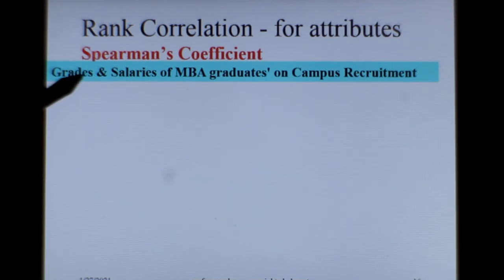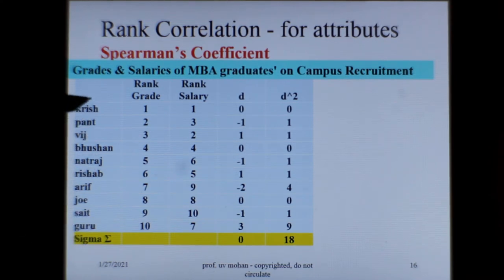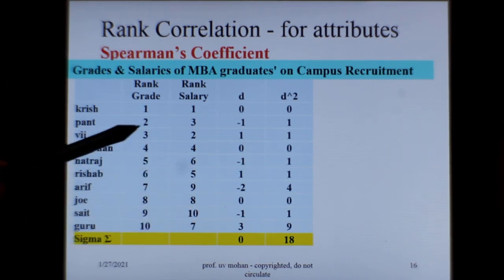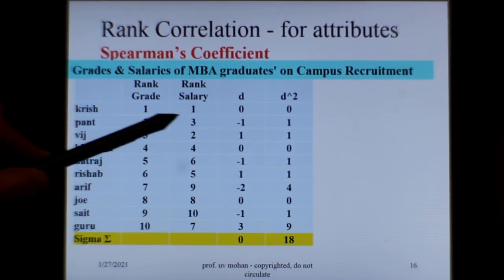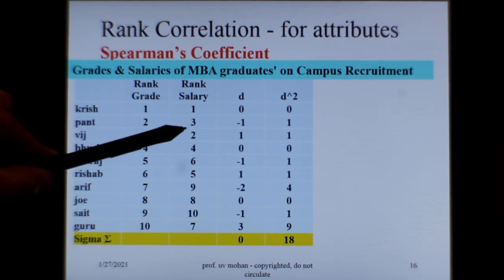This is a classical example of grades and salaries of MBA graduates in a campus recruitment. The students have acquired certain grades and are ranked based on those grades. They have also been offered salaries, and those salaries are ranked as well. There may be differences between the two ranks for various reasons. The d is the difference between the grade rank and the salary rank — for example, a person ranked 2 in grades was ranked 3 in salary.